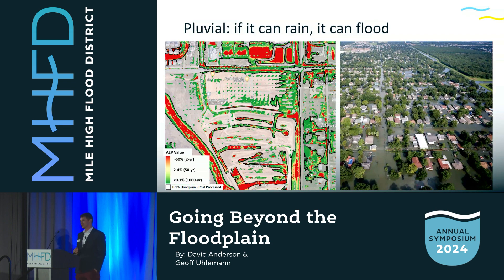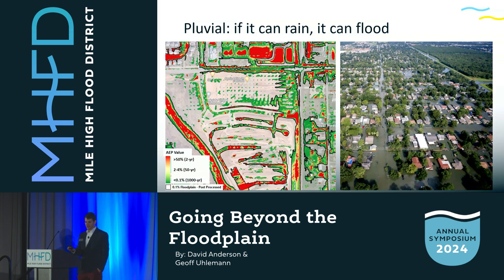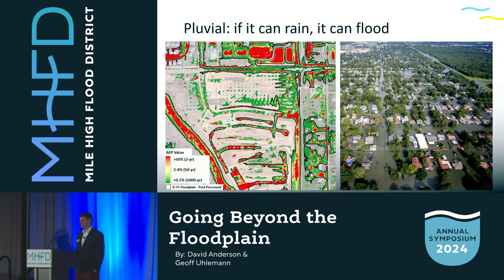There isn't a current regulatory framework for 2D Rain-on-Mesh modeling to develop pluvial floodplains, but as we know, where it can rain, it can flood. The photo on the right shows that in an urbanized area, where is the river in that picture? It's a little bit hard to tell — so our current 1D riverine framework may not necessarily capture that. That's why we're moving toward Rain-on-Mesh modeling to better capture the entire risk for the whole system and tie it back to the larger safety message.